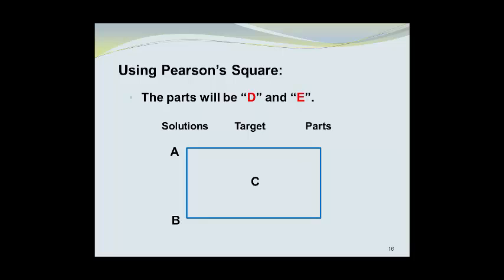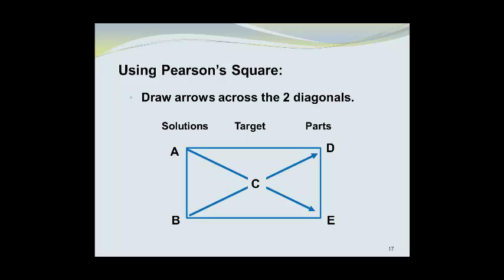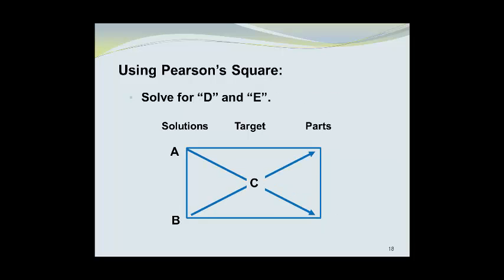Next, we will add in parts D and E on the right-hand side of the rectangle or square. We can draw arrows across the two diagonals, from A to E, and from B to D.